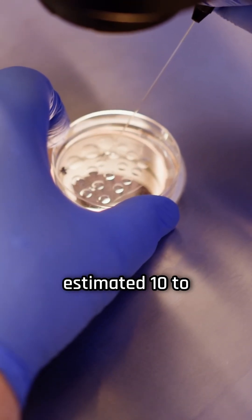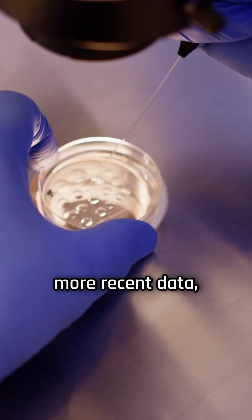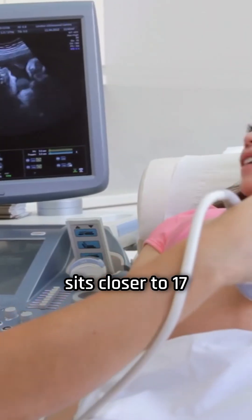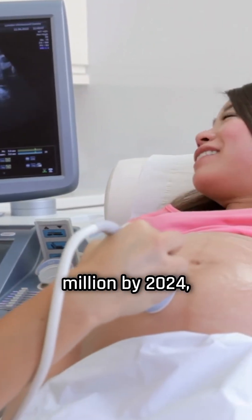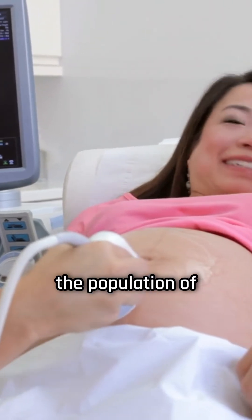By 2018, researchers estimated 10 to 13 million IVF births, and when accounting for more recent data, the number likely sits closer to 17 million by 2024, more than half the population of Australia.